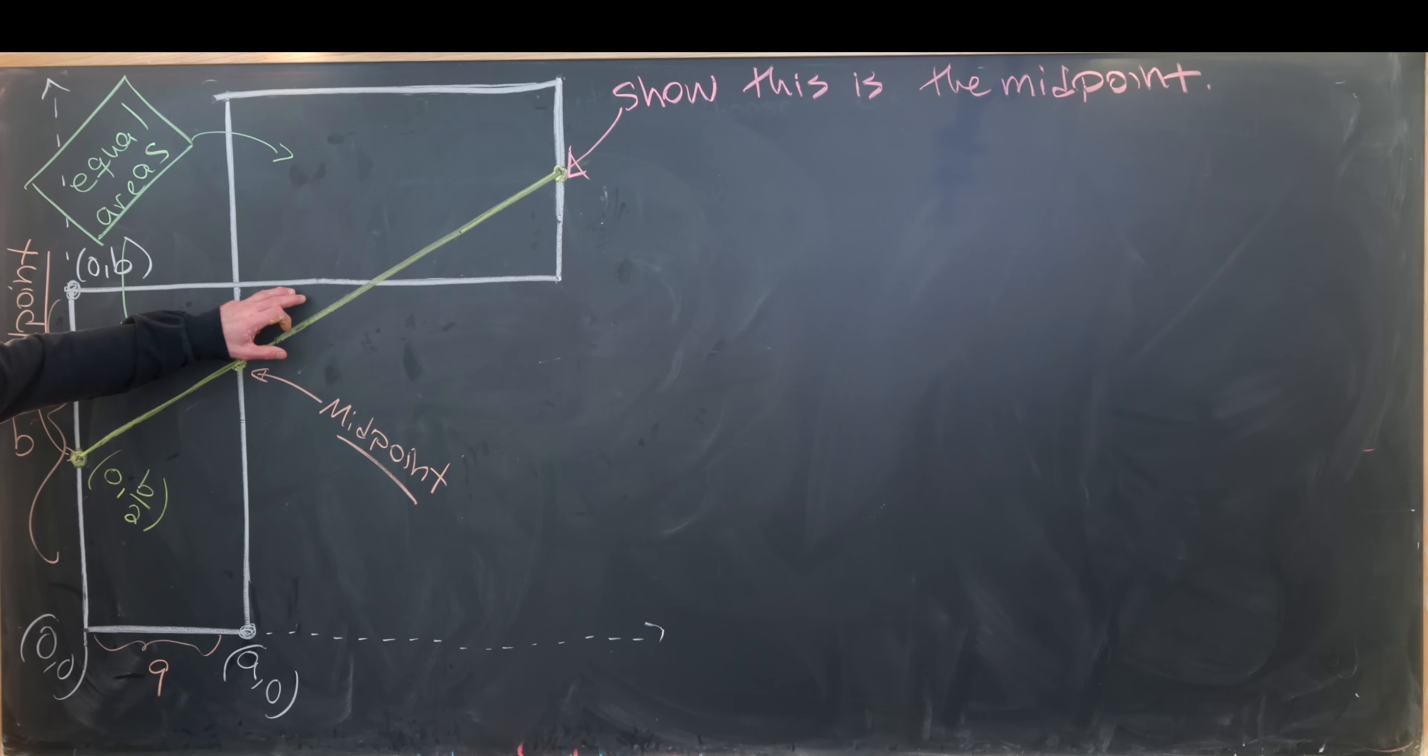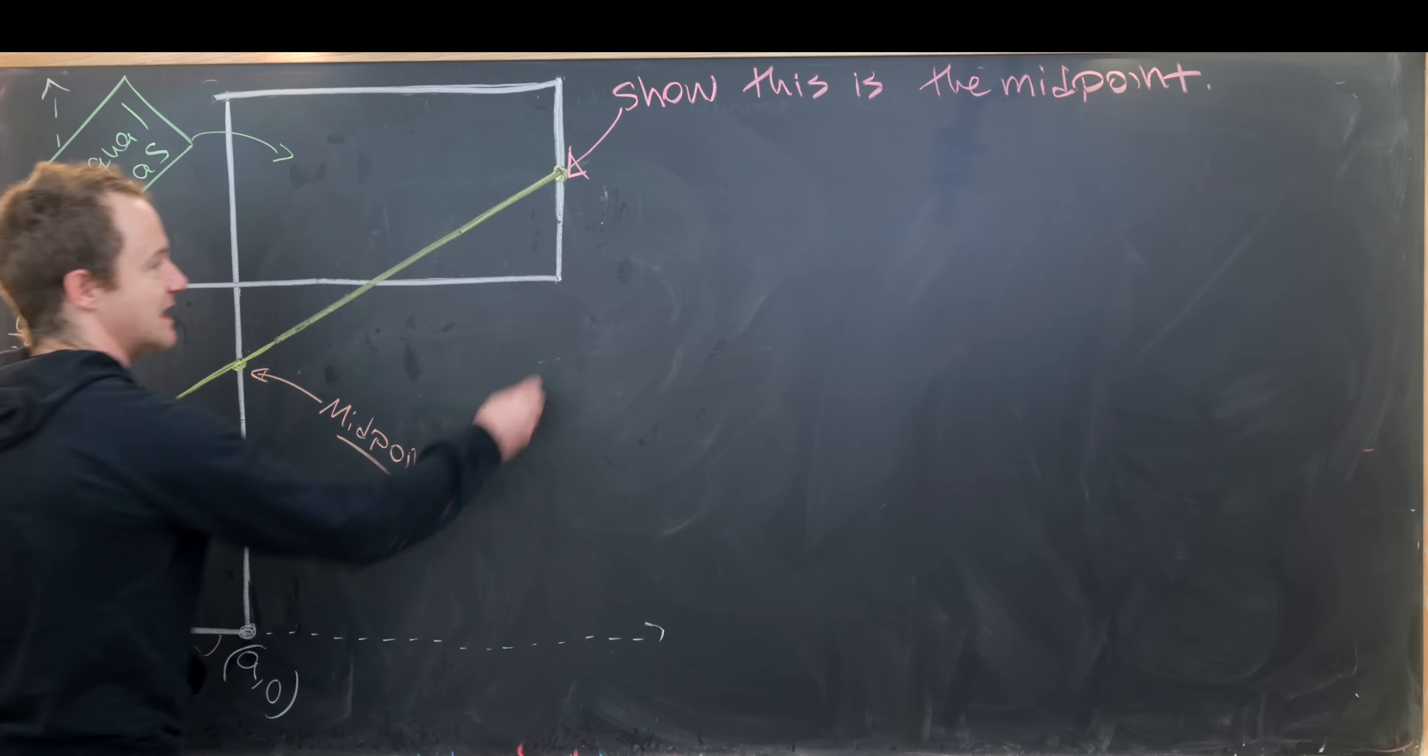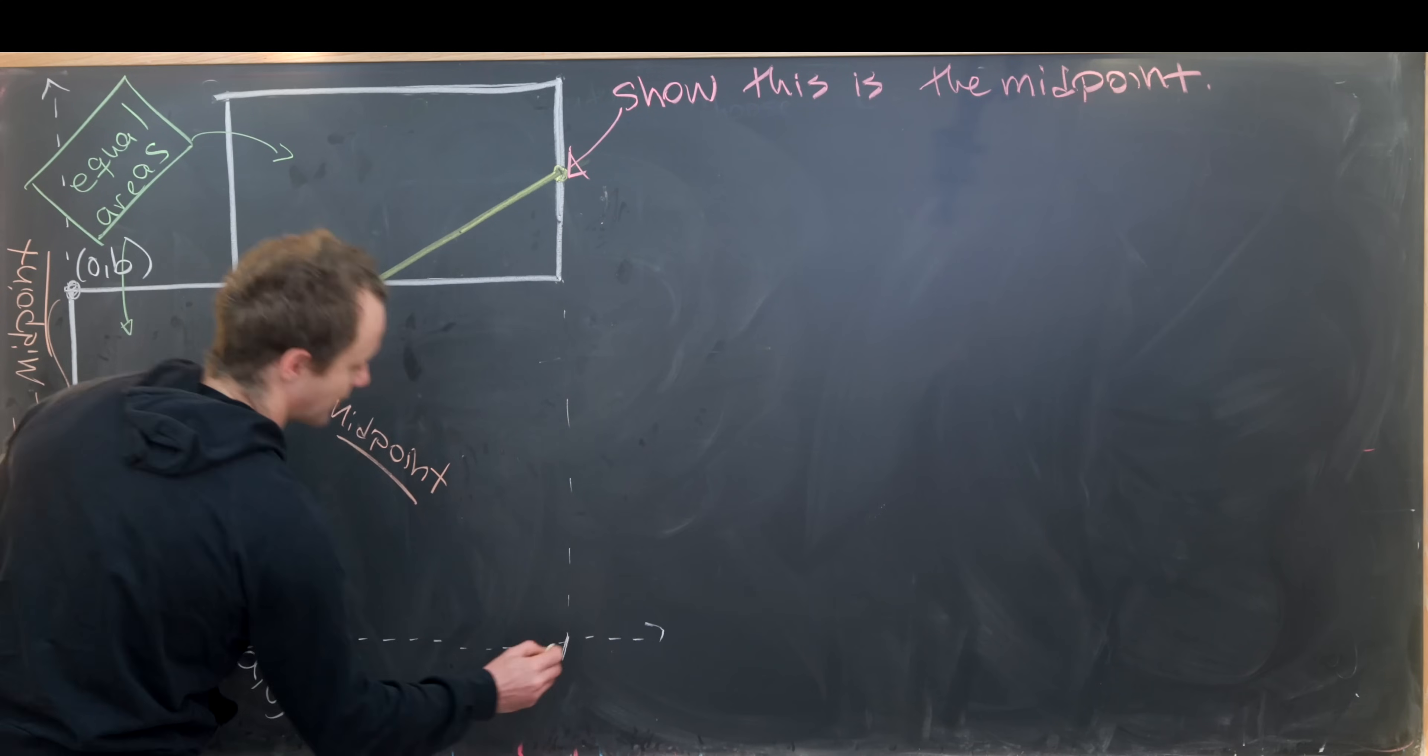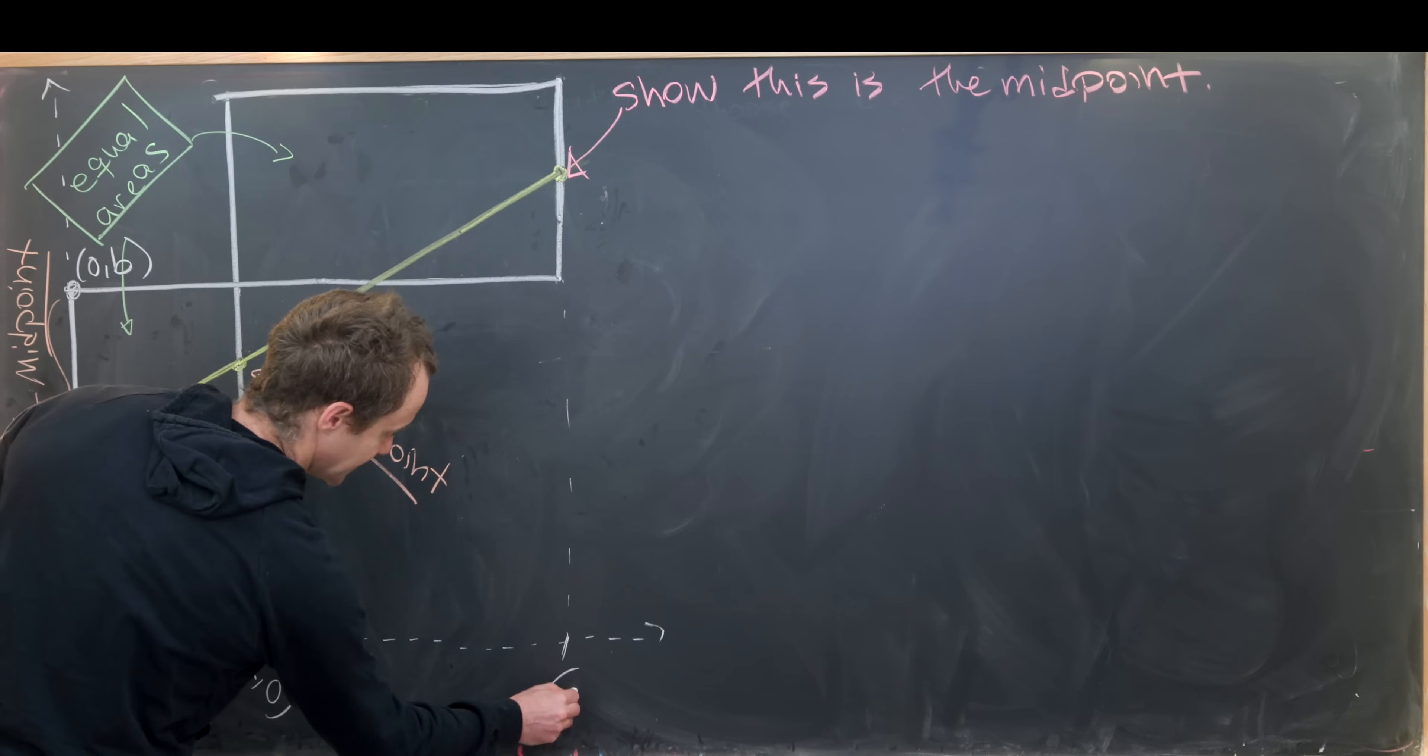Then I'm going to say that this is a c by d rectangle. So that makes this point over here equal to (a+c, 0).